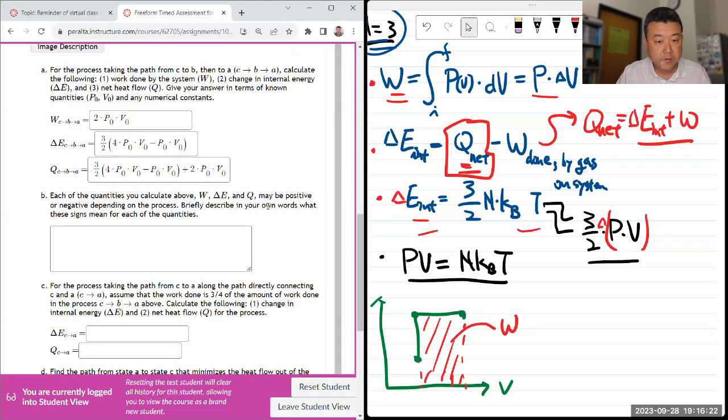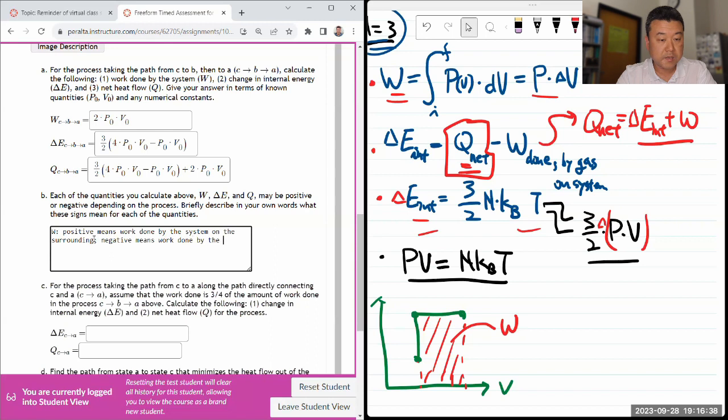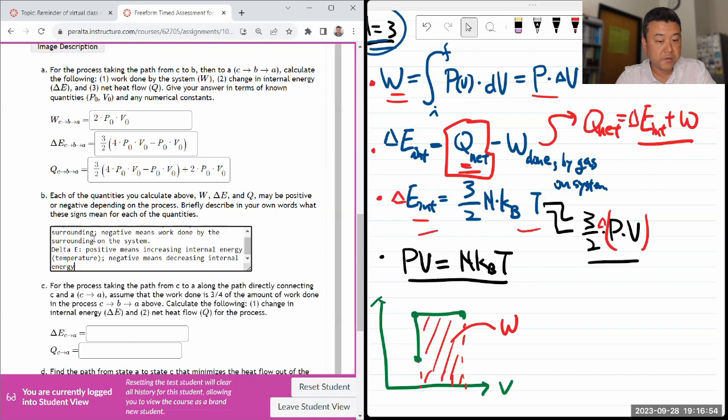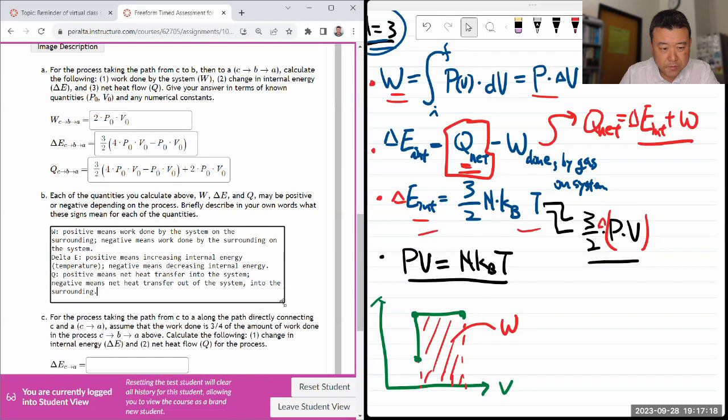So each of the quantities above may be positive or negative depending on the process. Briefly describe what the signs mean. For work, positive means work done by the system on the surrounding. Negative means work done by the surrounding on the system. ΔE, positive means increasing internal energy or temperature. Negative means decreasing internal energy. Q net heat transfer, positive means net heat transfer into the system. Negative means net heat transfer out of the system into the surrounding.